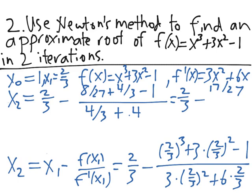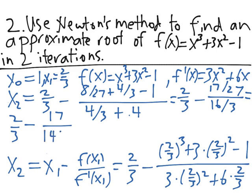The numerator simplifies: 4/3 − 1 = 1/3 = 9/27, so 8/27 + 9/27 = 17/27. The denominator: 4/3 + 4 = 16/3. Multiplying top and bottom by 27 gives 17 / (9·16) = 17/144. Since 2/3 = 96/144, we get x₂ = 96/144 − 17/144 = 79/144 as our approximation.